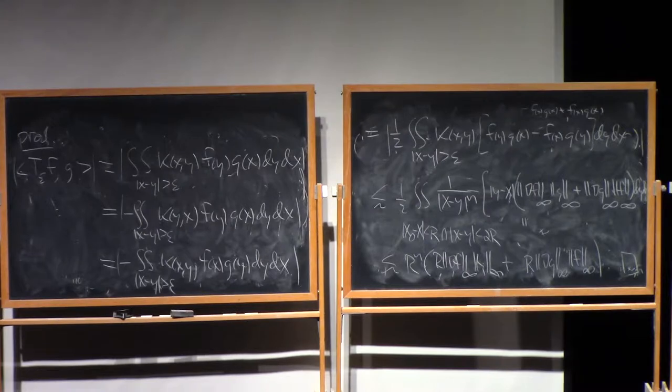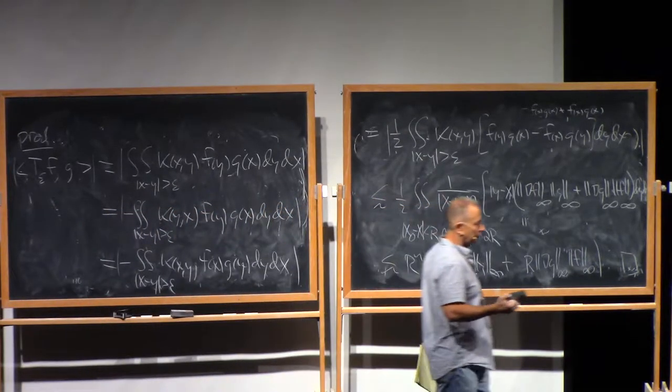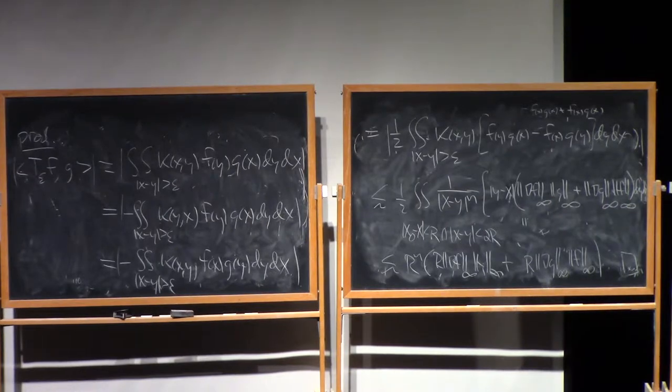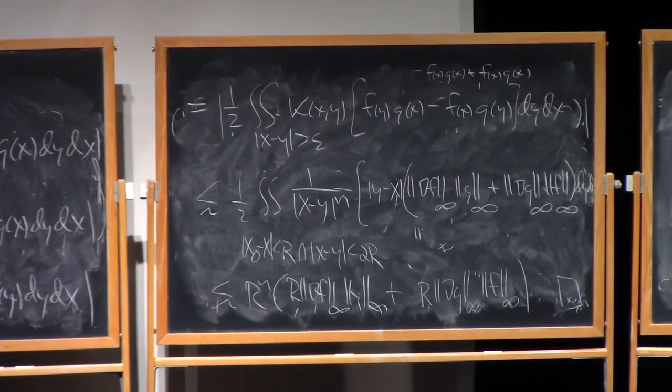In fact, if we had a convolution kernel, that antisymmetry would be, in and of itself, enough cancellation to give you L2-boundedness. But we're in the non-convolution case. We need a little bit more.